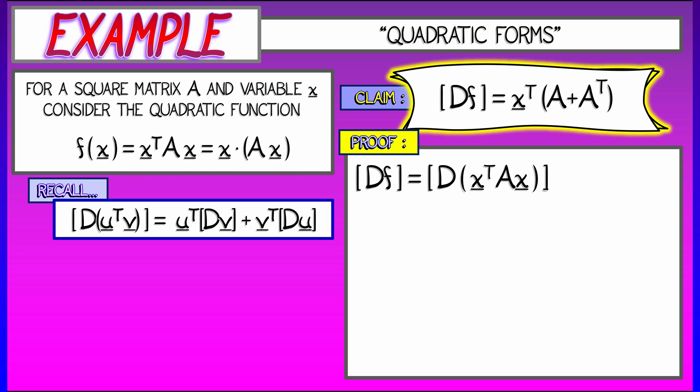We're going to recall the fact that the derivative of u dot v is u dot the derivative of v plus v dot the derivative of u. Substituting into this, where u is equal to x and v is equal to A times x...